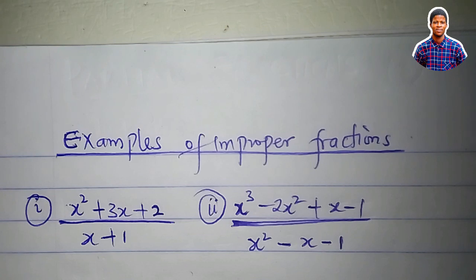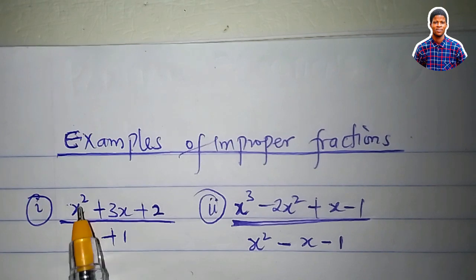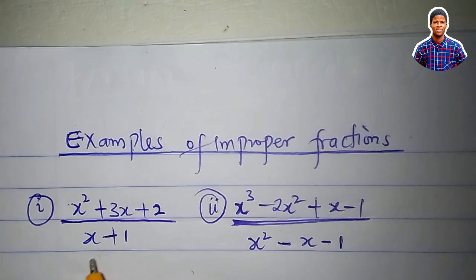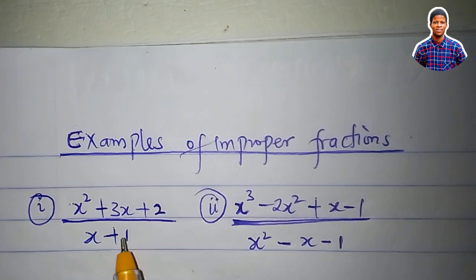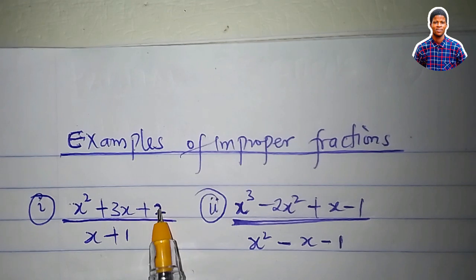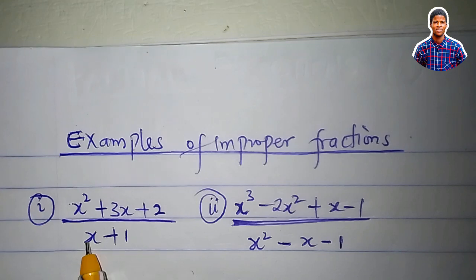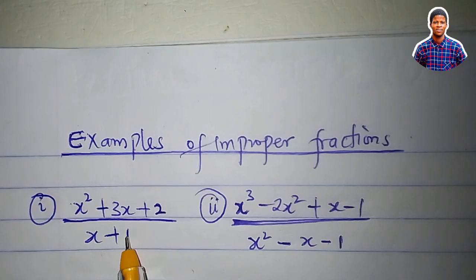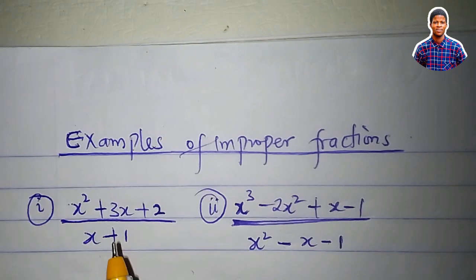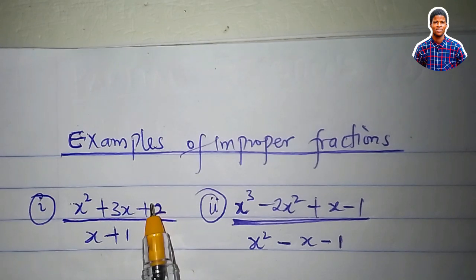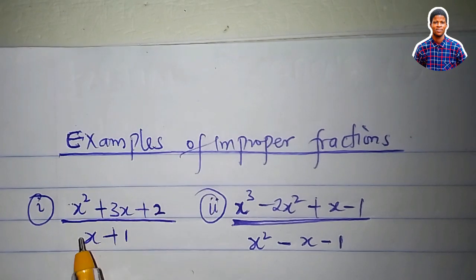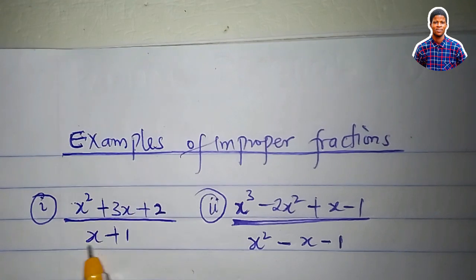Now I have five examples here. Look at this fraction: x squared plus 3x plus 2, all over x plus 1. The degree of this numerator is 2. By degree, I mean the highest power of x. The highest power of x at the denominator is 1. Since the degree of the numerator is greater than the degree of the denominator, it is an improper fraction.